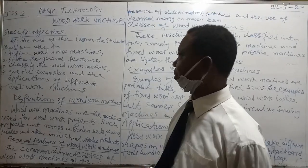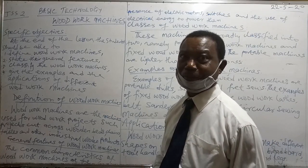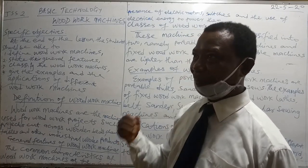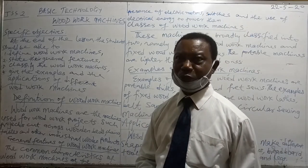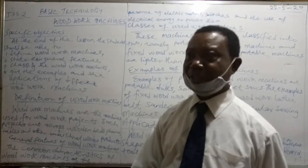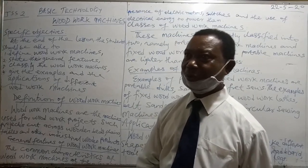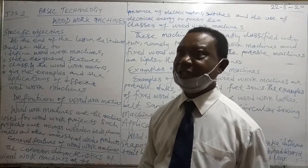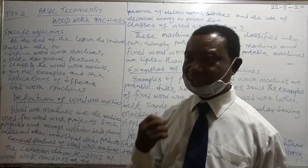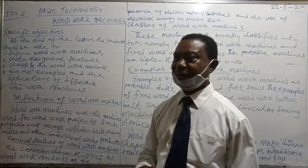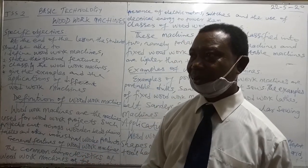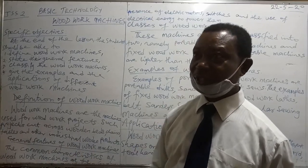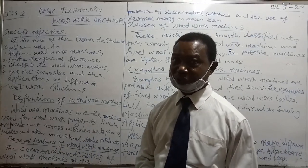The following four specific objectives are expected to be achieved at the end of the lesson. One, by the time the lesson is over, students should be able to define woodwork machines. Two, they should also be able to state the common features of all woodwork machines. Three, they should be able to classify the woodwork machines. Four, they should be able to give examples and the uses of some of those machines being taught today.